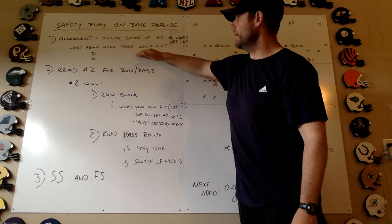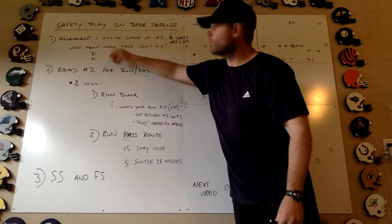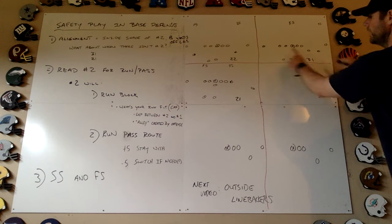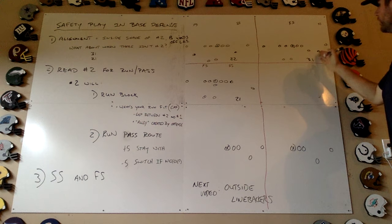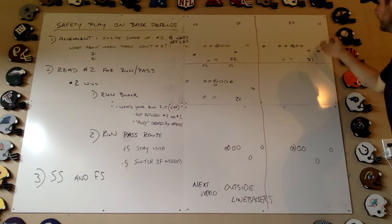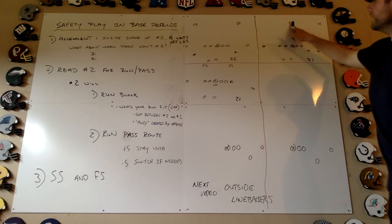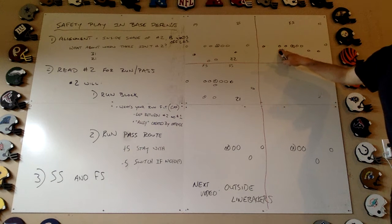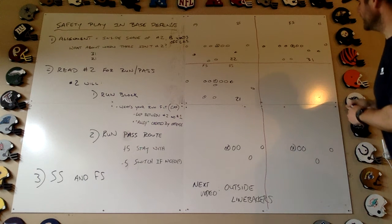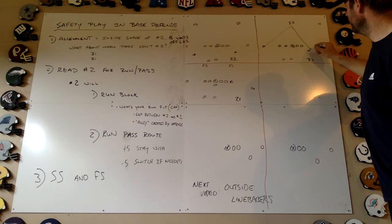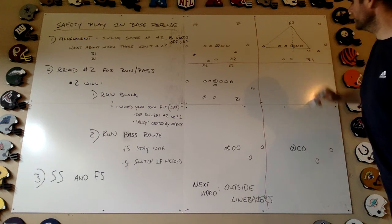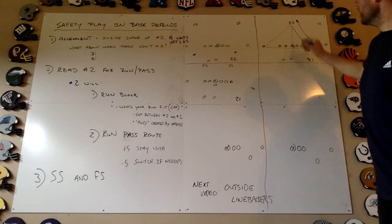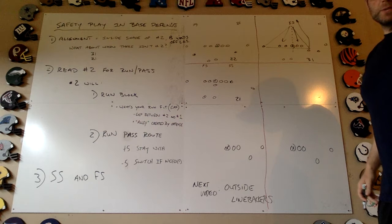What happens if there's not a number two to your side? Maybe it's a 31 formation or a 21 offensive formation. In a 31 set — three eligibles to one side and just one on the other — if this is your side, you find number two, inside shade, eight yards off. But on the other side, there's only a number one eligible receiver, then an offensive tackle. In that case, we need to be triangled between number one and number three, basically right in the middle over the center, because we need to be able to drive on number three if he runs a deeper post. We're also going to be downhill run defenders in the alleys on both sides.